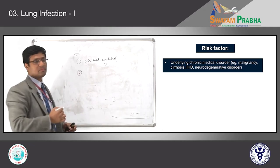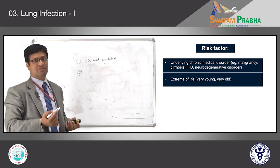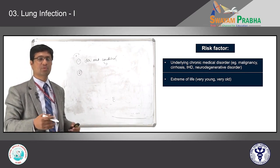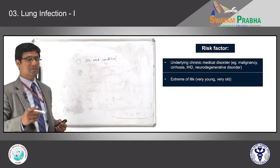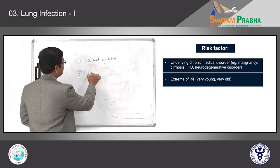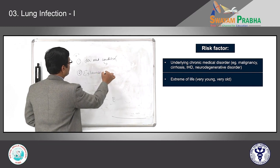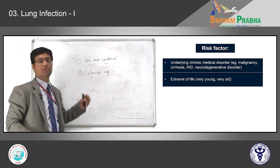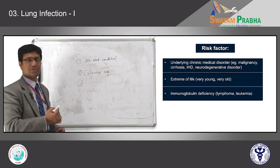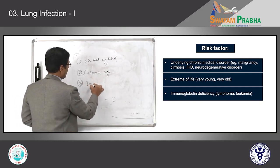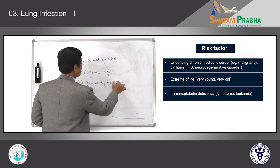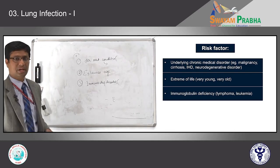As mentioned, extremes of life — either infants or children below the age of 5 years — are more commonly affected with lung infections. Similarly, early age and very old age are more common. Extremes of age groups and all individuals who have immunodeficiency disorders are more prone to develop lung infections.